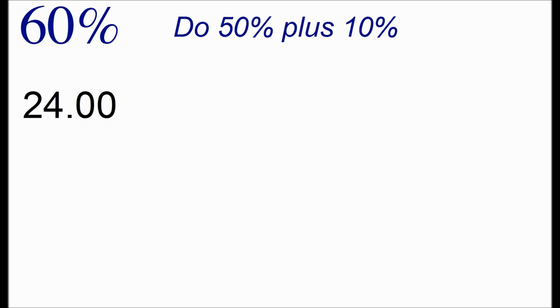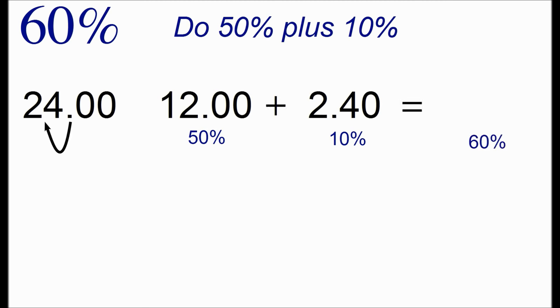To calculate 60% we're going to build on a couple of the things we've done already. We need to calculate 50% and then add that to 10%. So to calculate 60% of 24, we first calculate 50% which is 12. Then we calculate 10% by moving the decimal point over. And we add these two numbers together to get 60% is 14.4.